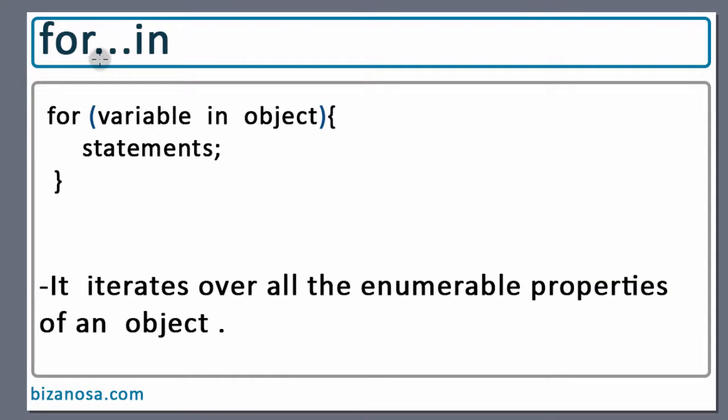Hi and welcome back. So let's move on to the for...in loop. Now the for...in loop will iterate over enumerable properties of an object.